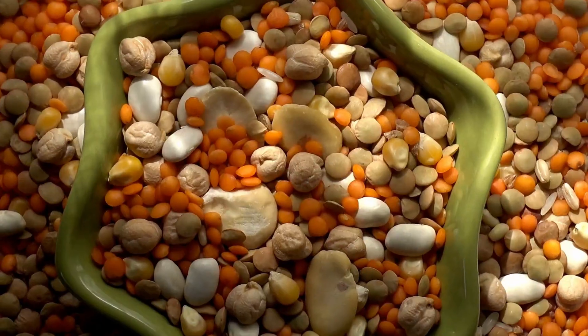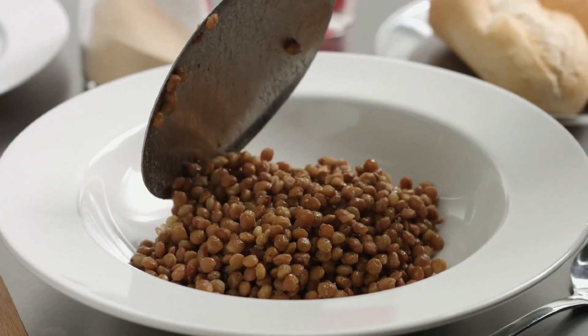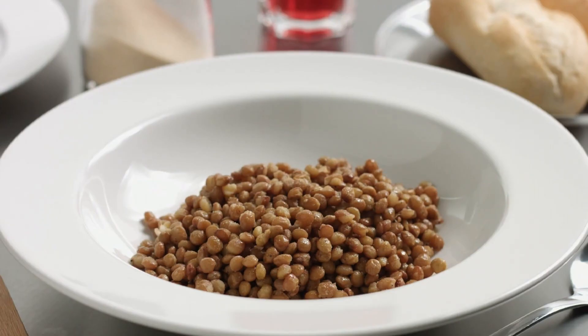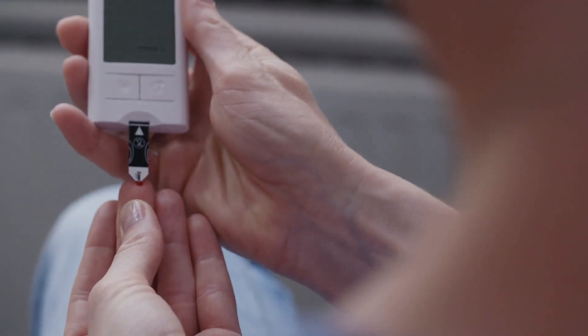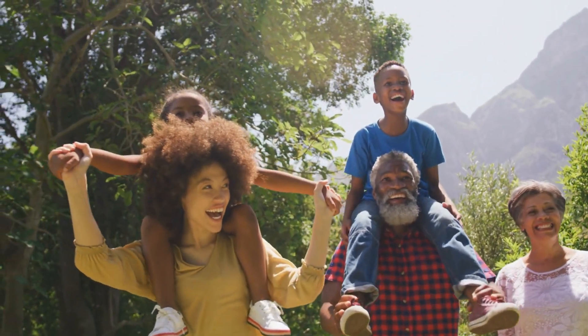Whole grains, pork, and legumes are great food sources. Adults should shoot for about 1.1 to 1.2 milligrams a day. If you're diabetic, your thiamine needs might be higher. It's a simple addition with potentially life-changing effects.